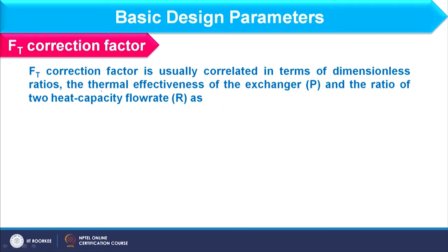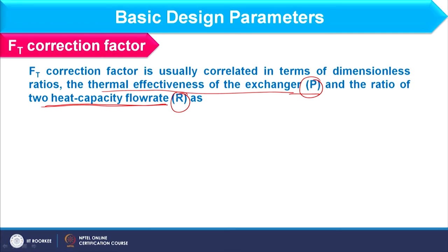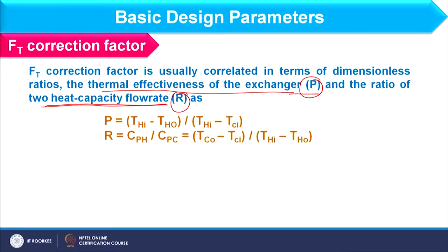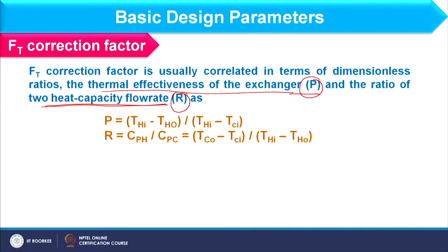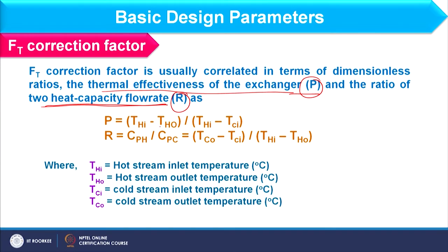As far as the FT correction factor is concerned, we consider two different parameters: the thermal effectiveness of the exchanger, represented as P, and the ratio of two heat capacity flow rates, R. Depending on these two values we determine the FT factor. P is the thermal effectiveness of the exchanger — how effectively heat transfer takes place. Its expression is P = (T_HI − T_HO) / (T_HI − T_CI).